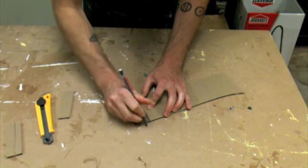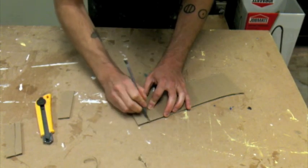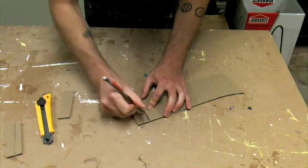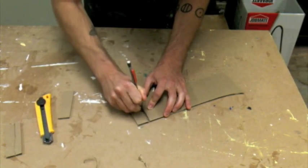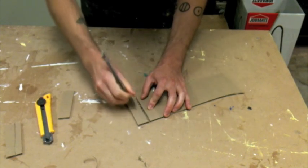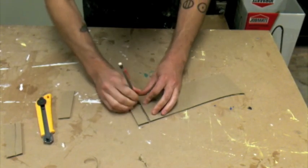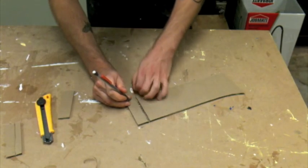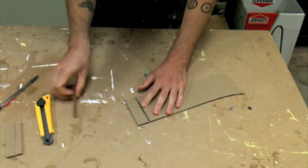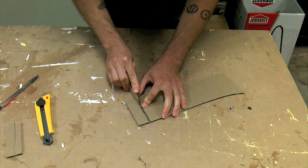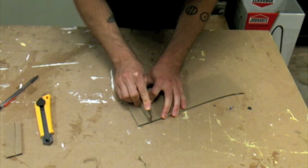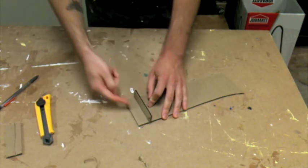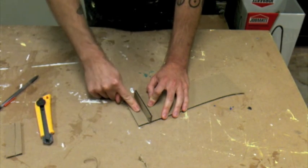Just make sure that you can get as much out of there as possible so that you have a clear channel to slide that other second piece in. And then you can glue it in.